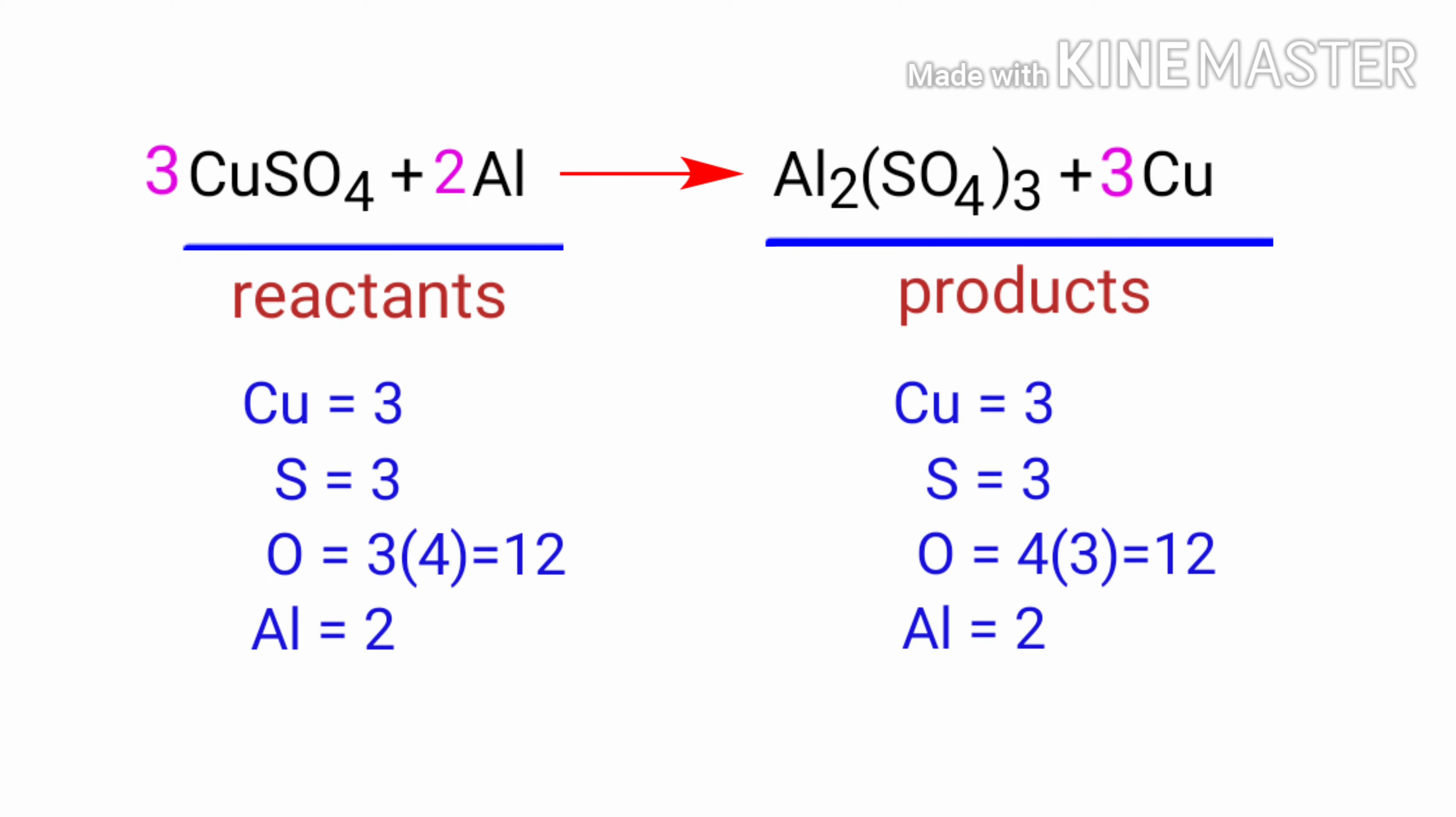The equation is now balanced. There are 3 copper atoms, 3 sulfur atoms, 12 oxygen atoms, and 2 aluminium atoms on both sides.